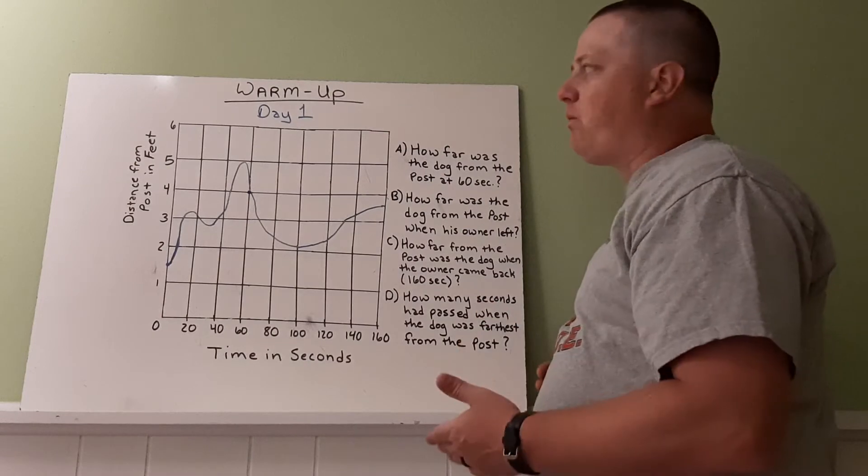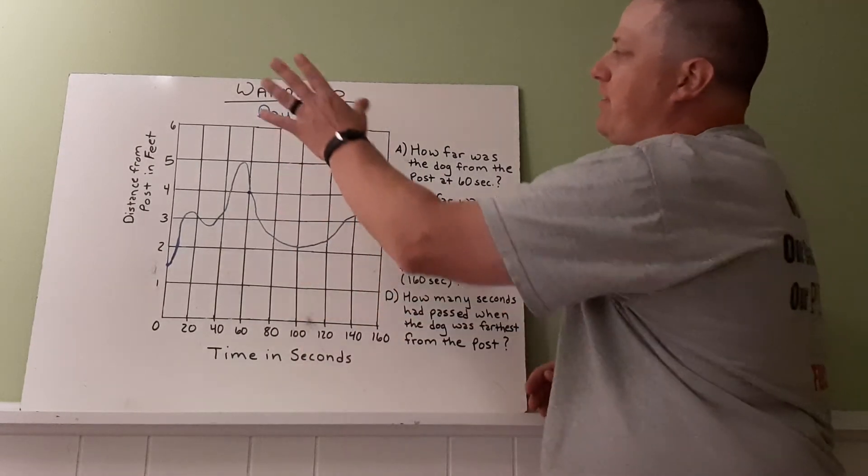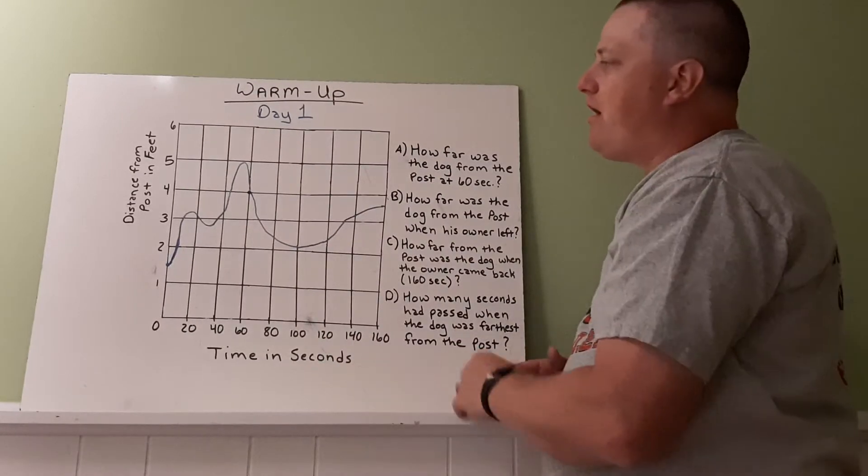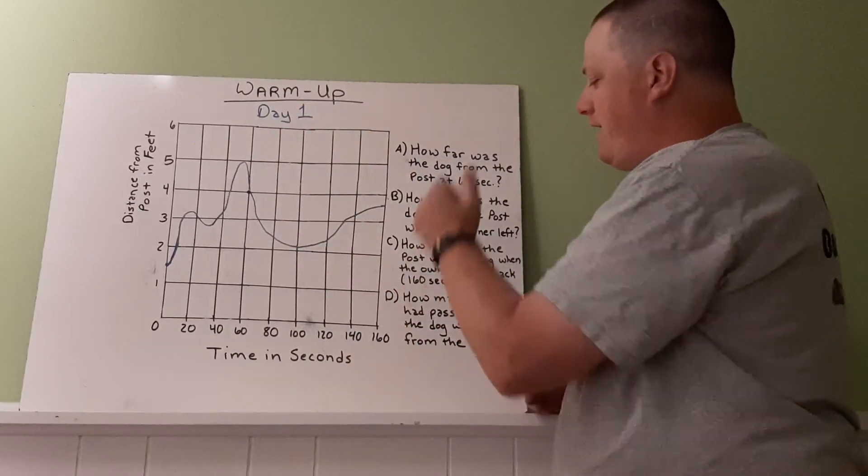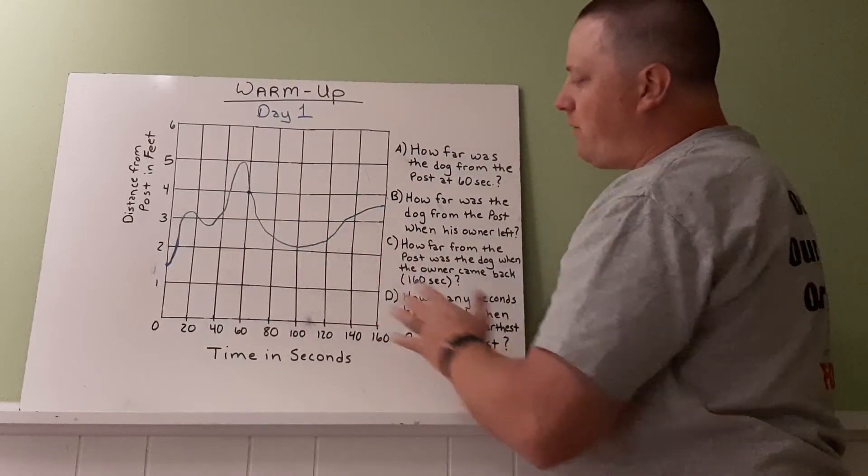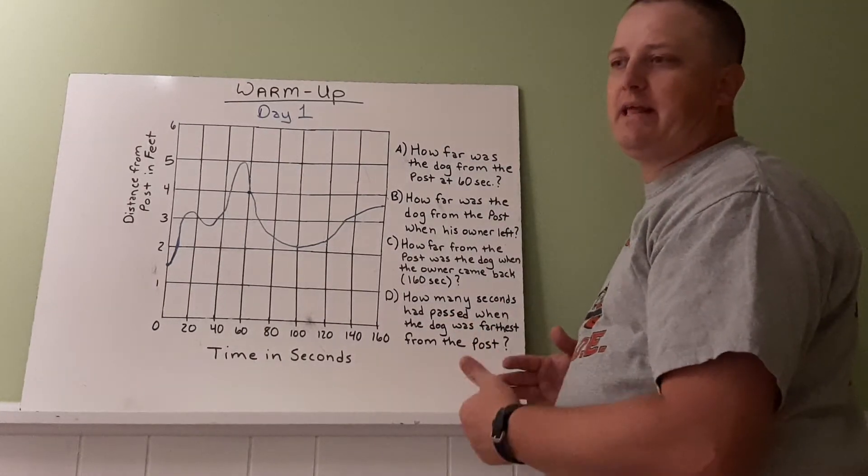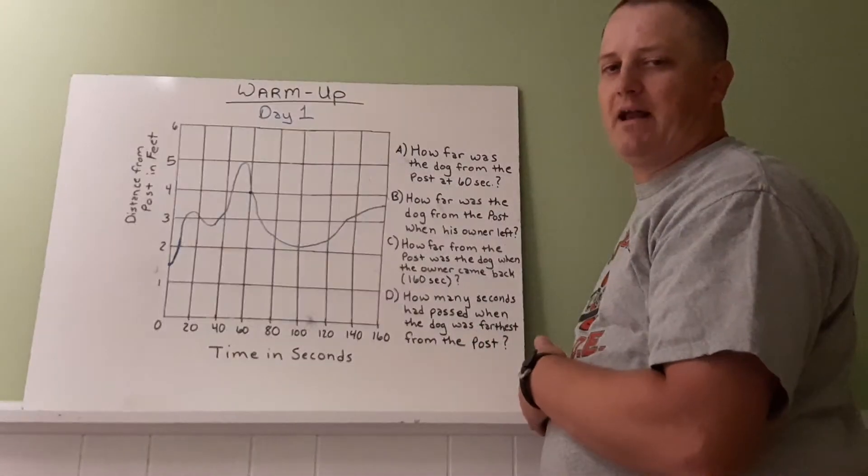All right, so here's our warmup. So if you go online and look at the online book, there will be three of these graphs. All I want you to do is focus on day one and answer these four questions for day one. So here's what the graph basically looks like. Just do your best to estimate the answers to these and we'll talk about them tomorrow.